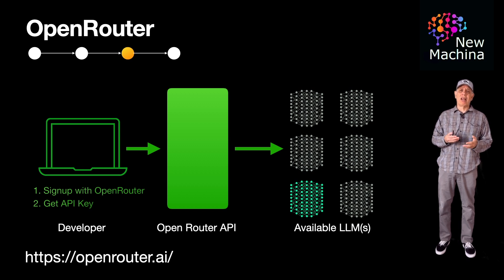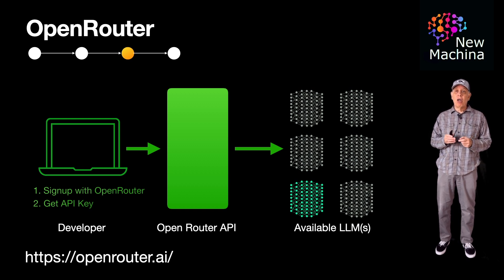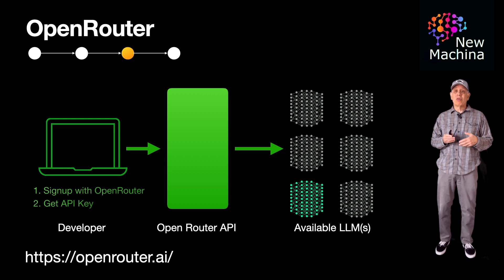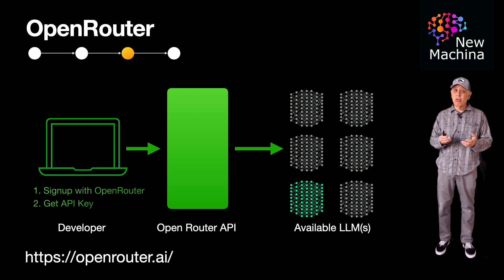However, on the cons side of the ledger, Open Router introduces potential cost overhead as they charge a small percentage above and beyond what the LLM costs. Additionally, you can see increased latency with an additional system in the network path. Since Open Router abstracts the LLM from you, you have less control over the specific LLM model versions, which might be important for some use cases or large-scale deployments.